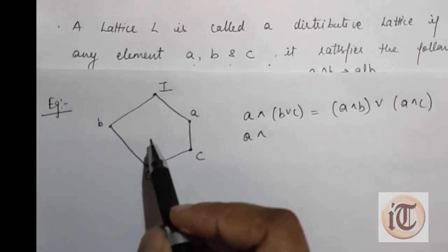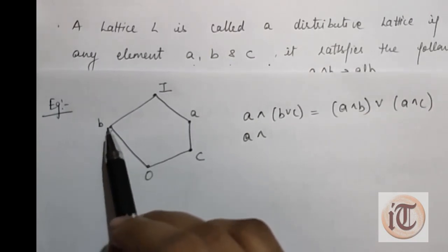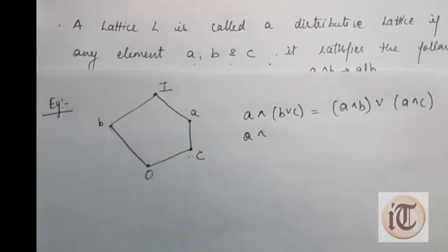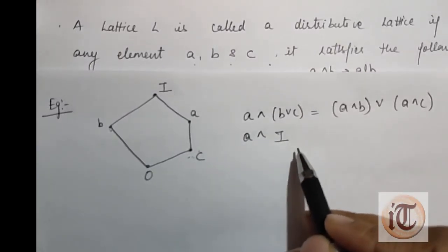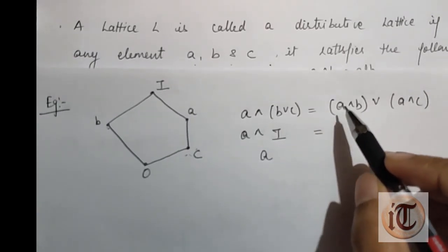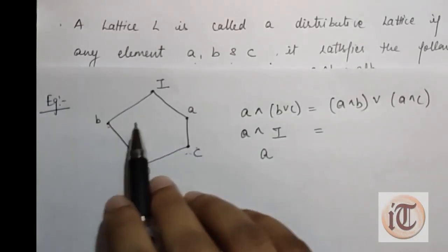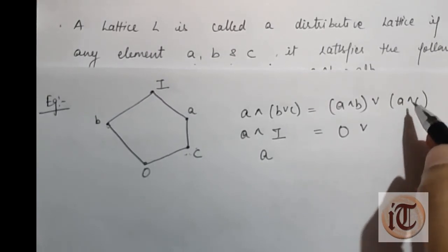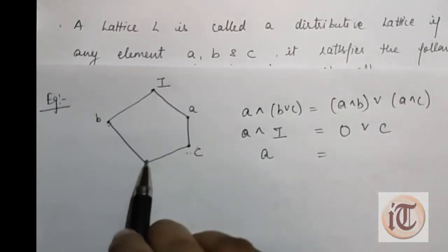B ∨ C means the least upper bound of B and C. The upper bound is I, so B ∨ C = I. Then A ∧ I: the greatest lower bound is A. Now the right-hand side: A ∧ B — the greatest lower bound of A and B is O. Then A ∧ C — the greatest lower bound of A and C: the lower bound is C, and O ∨ C equals C.